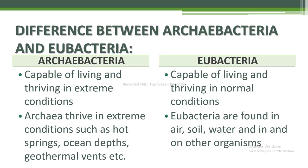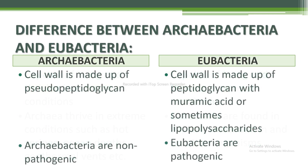First, regarding habitat: Archaebacteria are capable of living and thriving in extreme conditions such as hot springs, ocean depths, and geothermal vents. Eubacteria are capable of living in normal conditions and are found in air, soil, water, and in and on other organisms. Regarding cell wall: Archaebacteria cell wall is made up of pseudo-peptidoglycan, while Eubacteria cell wall is made up of peptidoglycan with muramic acid or sometimes lipopolysaccharides.